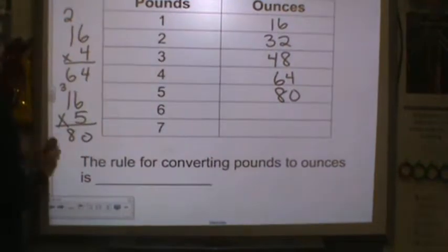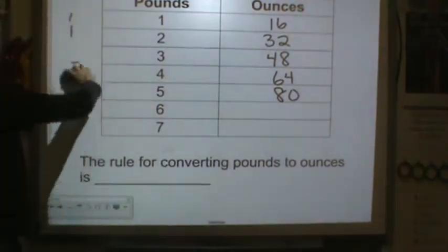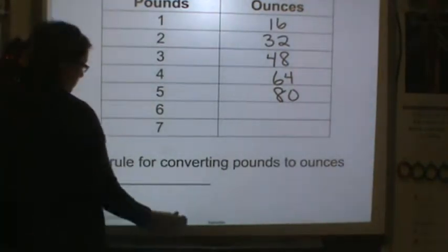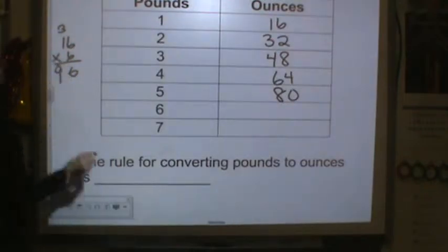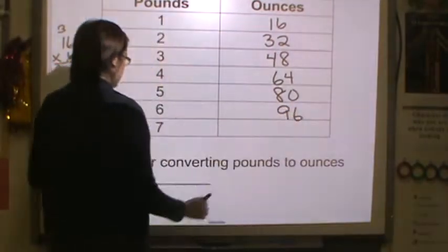All right we've got six pounds. How many ounces do we have? So 16 times six, six times six is 36. Six, seven, eight, nine, so 96 ounces in six pounds.